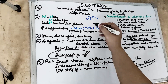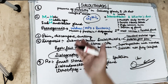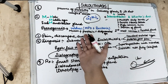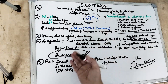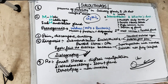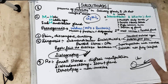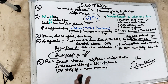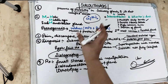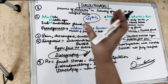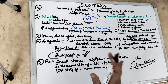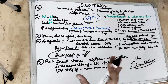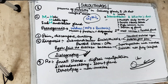Sialoliths contain mainly calcium phosphate — approximately 75% calcium phosphate, 12% calcium carbonate, 5% soluble salts, 5% organic matter, and 3% water. The key point to remember is that sialoliths are composed of acellular, amorphous material that is 75% calcium phosphate.